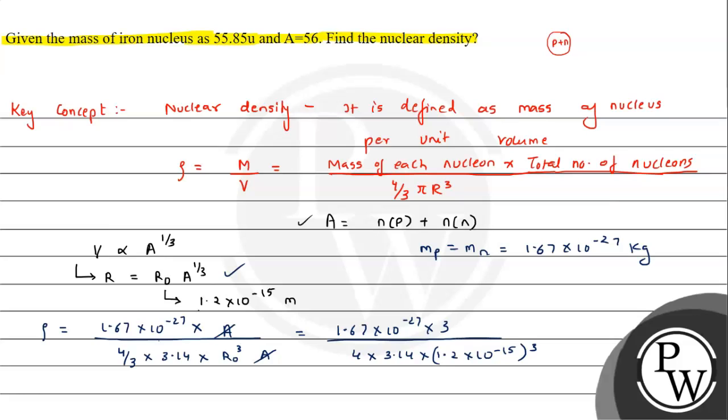On solving, finally we can have the result of rho as 2.25 times 10 raised to 17 kg per meter cube. This is the answer, that is nuclear density. I hope you understood the solution.